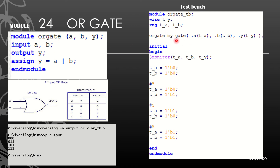The module 'or_gate' is instantiated as 'my_gate'. We connect: dot A to t_A, dot B to t_B, and dot Y to t_Y — relating A with t_A, B with t_B, and Y with t_Y. Then we get into the initial block where we use 'monitor'. Monitor helps you monitor the values and immediately updates you if there is a change. We are going to monitor t_A, t_B, and t_Y.